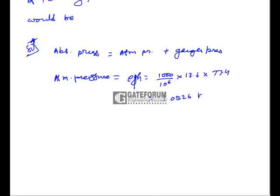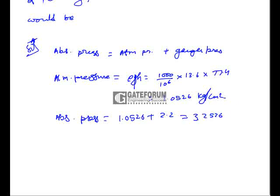This gives atmospheric pressure = 1.0526 kg per centimeter square. Therefore, absolute pressure = 1.0526 + 2.2 (gauge pressure) = 3.2526 kg per centimeter square. This is the right answer.